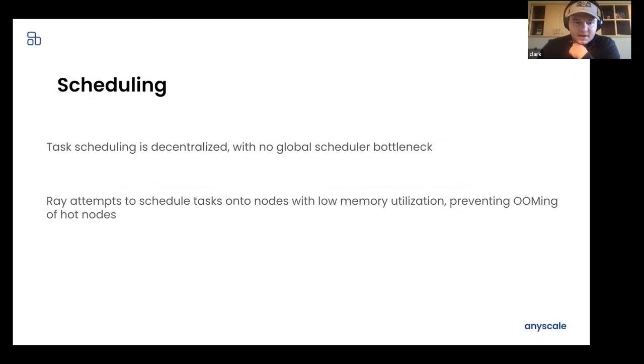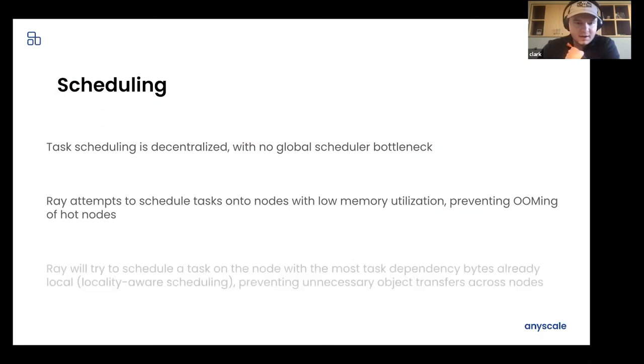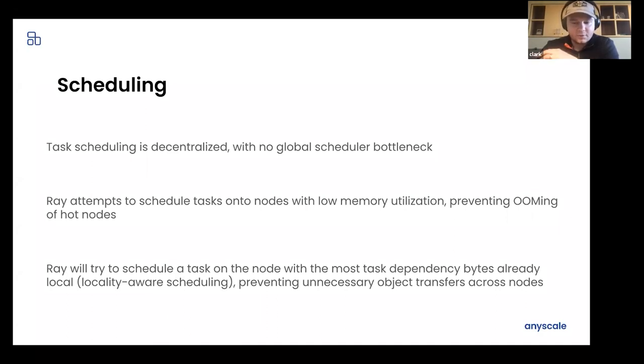As for scheduling niceties, task scheduling is decentralized. So there's no global scheduler bottleneck, which is one difference compared to Dask distributed. Ray will attempt to schedule tasks on the nodes with low memory utilization, hopefully preventing hot nodes that would eventually cause out of memory errors. And then Ray will also try to schedule a task on the node with the most task dependency bytes already local. This is called locality aware scheduling, and this will prevent hopefully unnecessary object transfers across nodes.